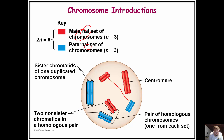Chromosomes that are exact copies of one another are called chromatids. Duplicate copies are called sister chromatids of one another, while chromosomes from homologous pairs are called non-sister chromatids of one another.